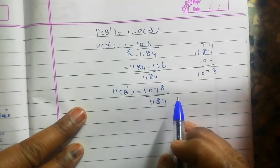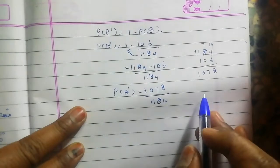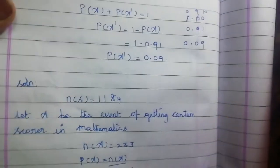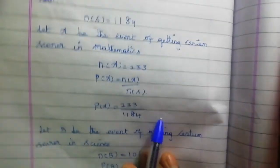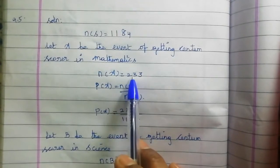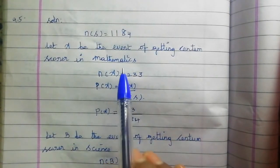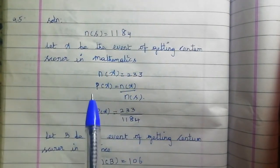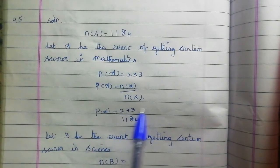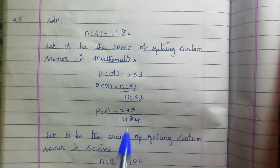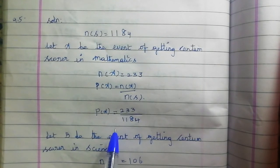Now let us summarize. Not getting a centum in science is the second part. The total sample space n(S) is 1184. For the first question — probability of math centum — P(A) is equal to n(A) by n(S), which gives the answer 233 by 1184.